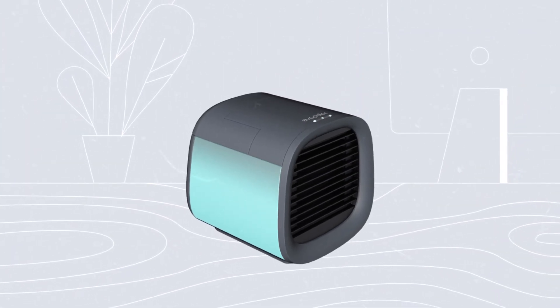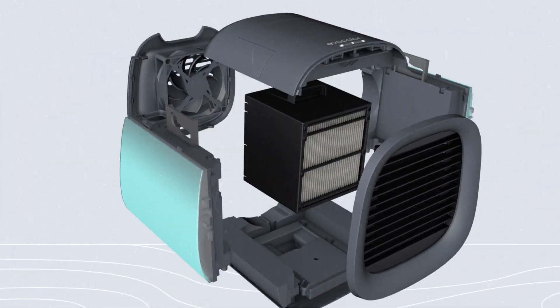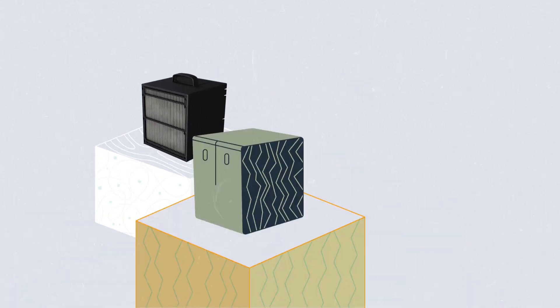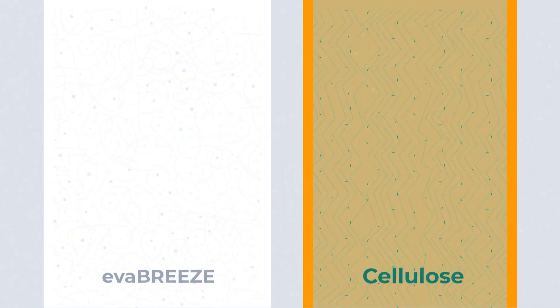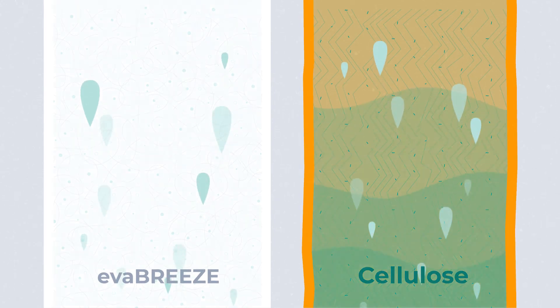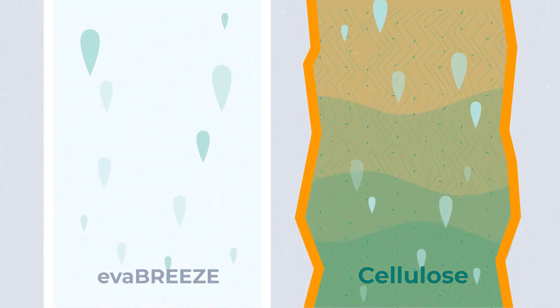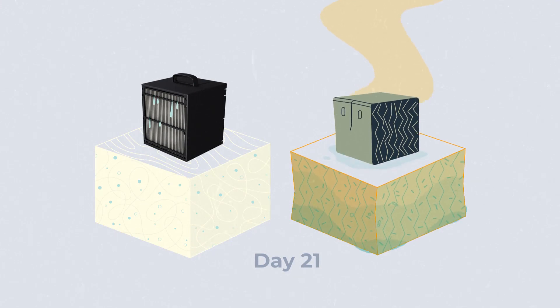Evapolar developed Evabreeze material, which is made of inorganic nanofibers, while other filters use cellulose. Evabreeze holds water between the fibers, while cellulose conserves it, which degrades it over time and causes bacteria and mold growth.